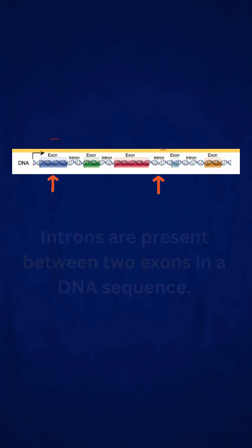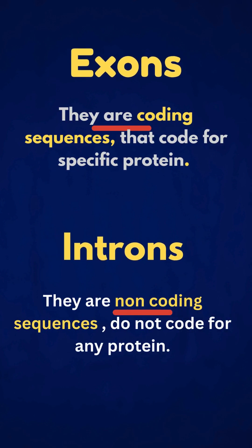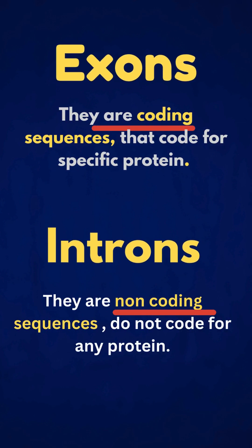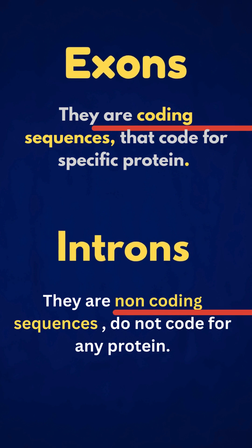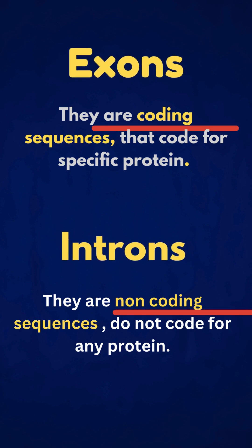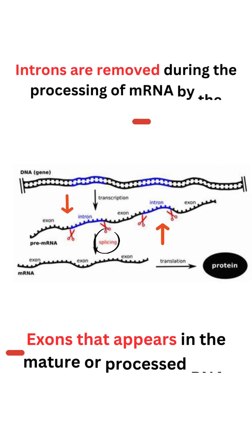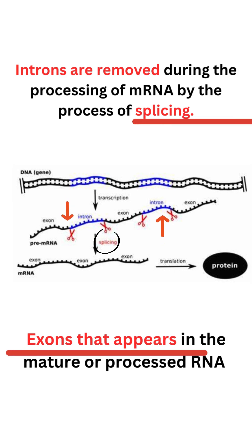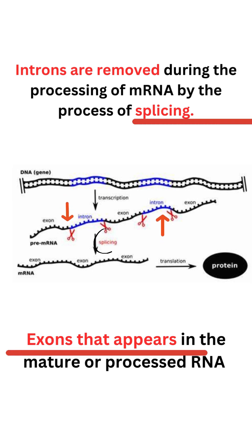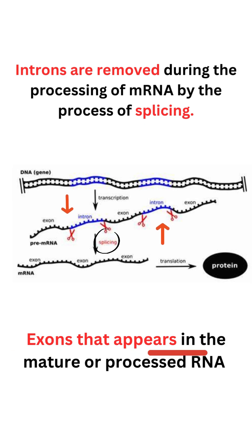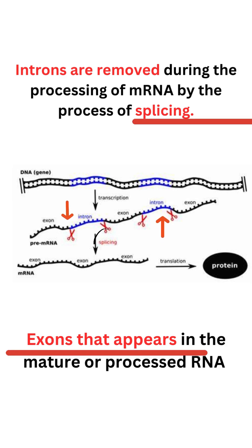The exons are the coding sequences that code for a specific protein. Introns are non-coding sequences and do not code for any protein. Introns are removed during the processing of mRNA by the process of splicing, but exons appear in the mature RNA. That is why they are the coding sequences.